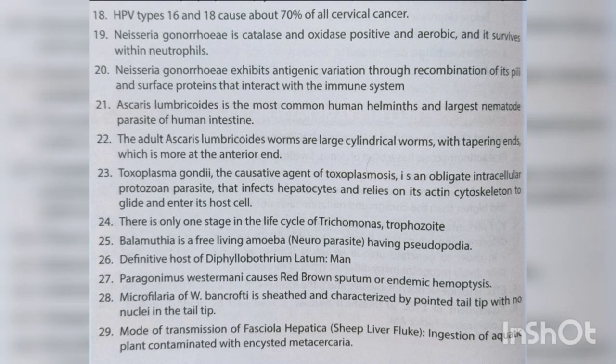Toxoplasma gondii, the causative agent of toxoplasmosis, is an obligate intracellular protozoan parasite that infects hepatocytes and relies on its actin cytoskeleton to glide and enter host cells. There is only one stage in the life cycle of Trichomonas — the trophozoite. Balamuthia is a free-living amoeba neuroparasite having pseudopodium.